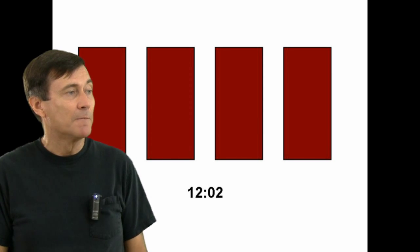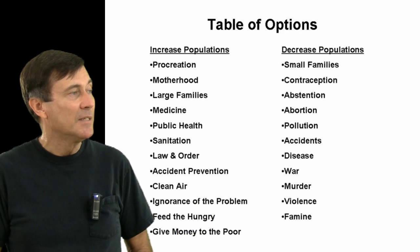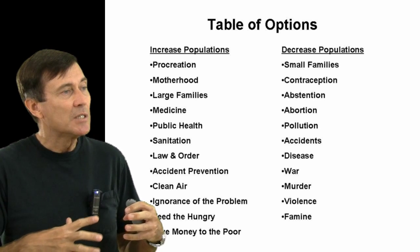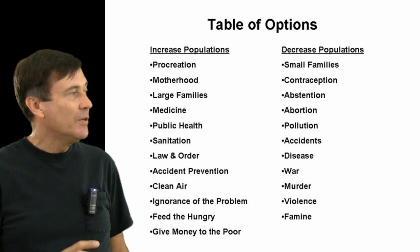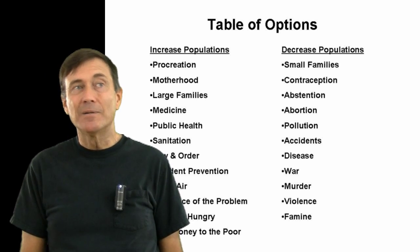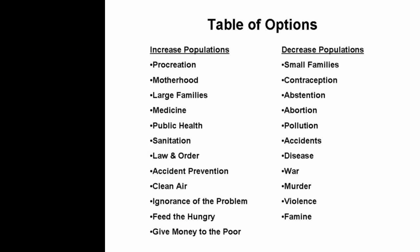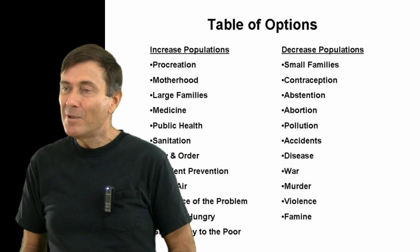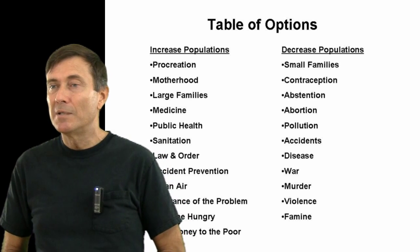So let's look at our options. On the left we see a list of things that cause the population to increase — we can just stop doing those things. But those are things we kind of like: medicine, public health, sanitation, law and order, accident prevention. We don't want to give that up. On the right are things that cause the population to decrease — we can do more of those. But some of those are pretty nasty, some more so than others.